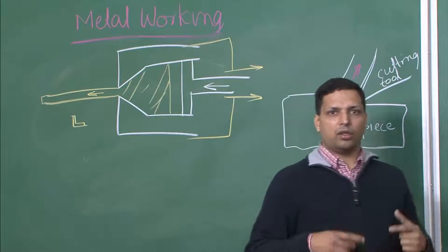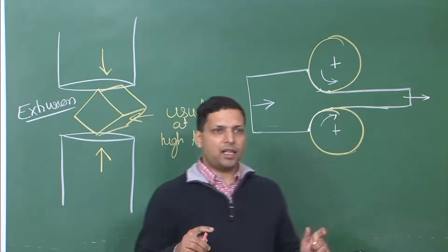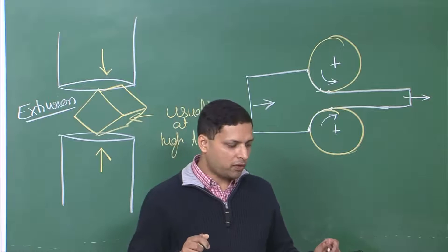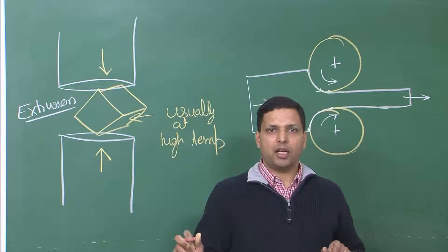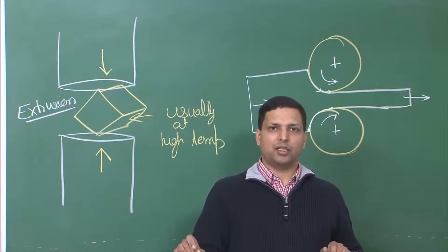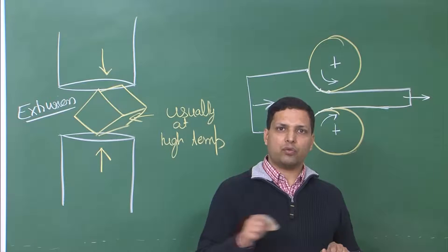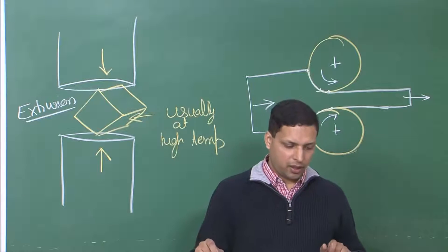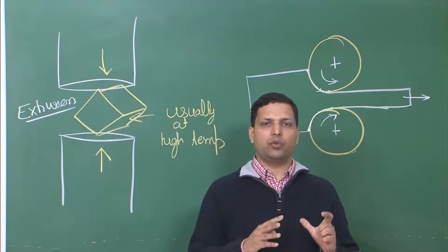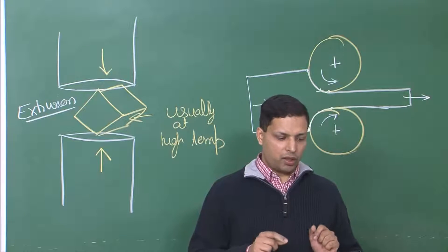Not only how much load comes on the cutting tool — which determines its life — but also the strain, strain rate, and temperature will be different depending on the machining configuration. Because of that, there will be different microstructures on the surface leading to different properties. We need to predict strain, strain rate, and temperature. One thing we can gather is that these three are the important parameters in metalworking, determining both the load required and the final properties of the material.